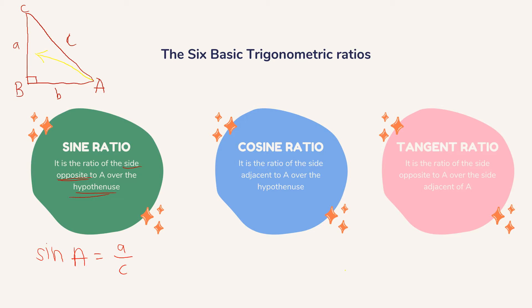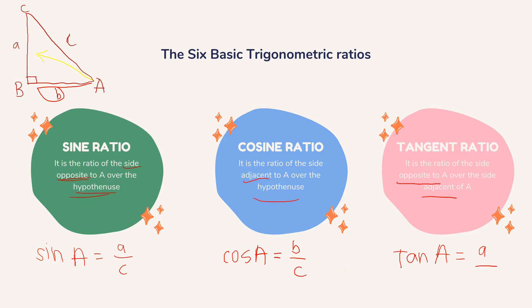For our next one, we have our cosine ratio. It is the ratio of the side adjacent to A over the hypotenuse. Adjacent means it's the one beside our angle. So cosine A is equal to B over C. And for the last one, we have our tangent ratio. It is the ratio of the side opposite to A and the side adjacent to A. So tangent A is equal to a over b.